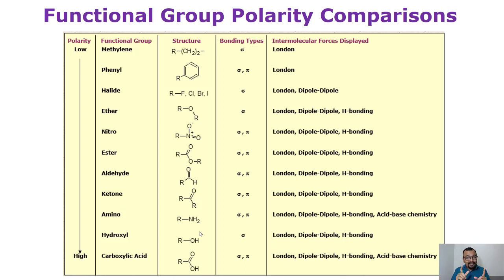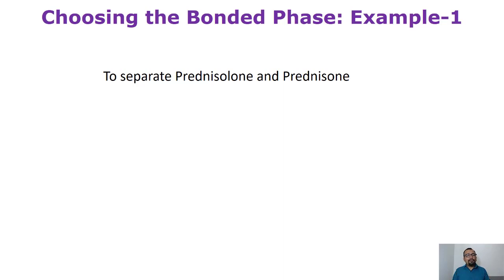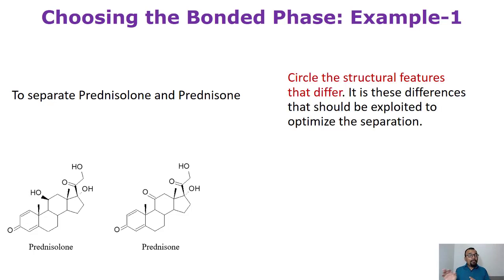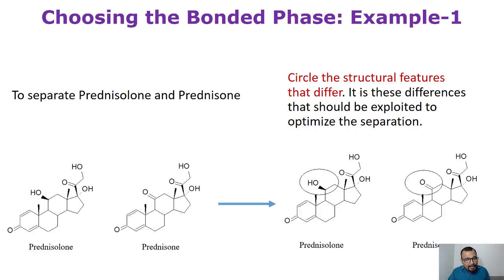Now let us understand with the help of actual practical examples. Suppose you have to separate prednisolone and prednisone. First understand the chemical structure of these two molecules, then circle the structural features that differ — identify what functional groups are not in common in these two molecules. You need to retain them at different retention times, so identifying the differences is key. In prednisolone, a hydroxyl group is present, whereas in prednisone, a carbonyl group is present at that position.